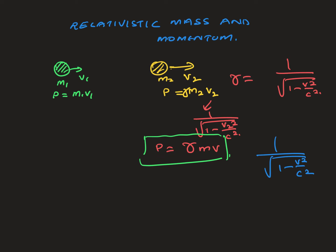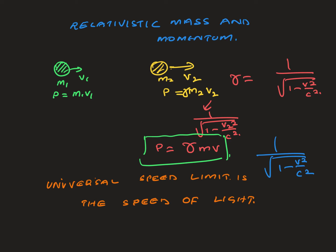Another way to understand why we can't exceed the speed of light: if the speed reaches c, gamma is infinity and momentum is infinity. But the change in momentum equals force times time, so to have infinite momentum, we would need to provide an infinite force. Since it's not possible to have an infinite force, we can't exceed the speed of light. According to Albert Einstein, the universal speed limit is the speed of light — we can never exceed it.